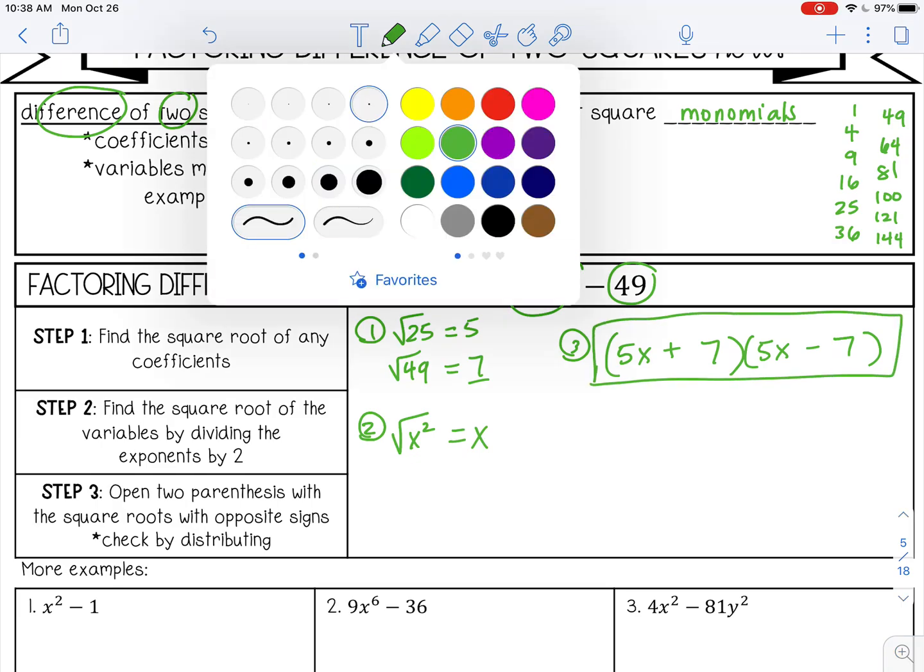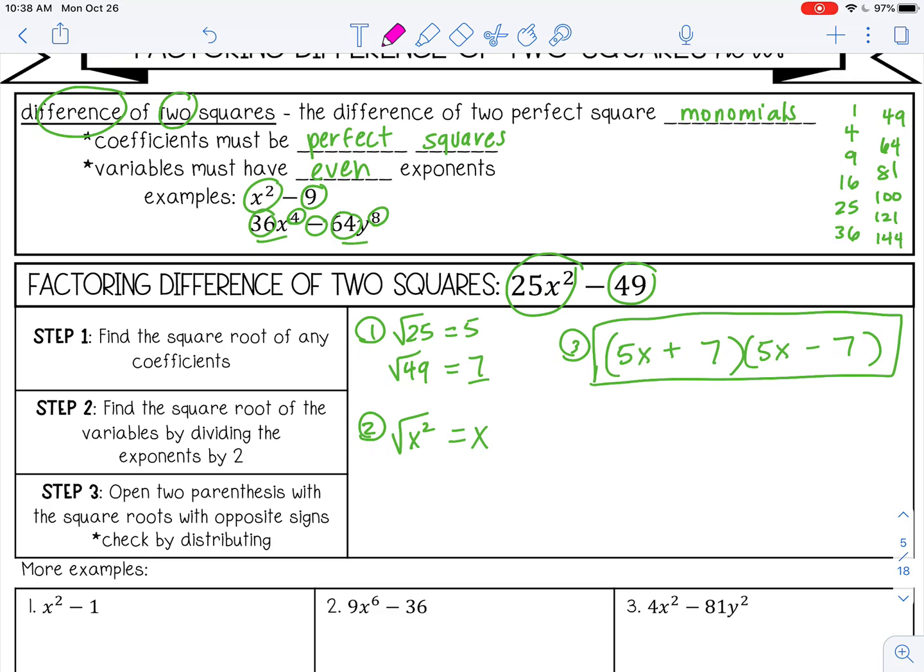And you can always check by distributing back. So 5x times 5x, that's 25x squared. I'm just distributing, or using FOIL first. Outer, 5x times negative 7 is negative 35x. Inner, positive 35x. And then negative 49. I have like terms in the middle. Negative 35x plus 35x. Well, that's zero, so I don't need to write that. I'm just going to bring the rest down. And as you can see, that is what we started with.